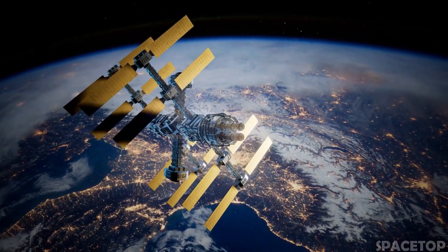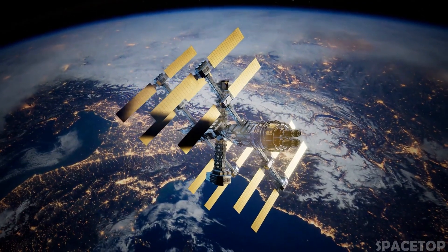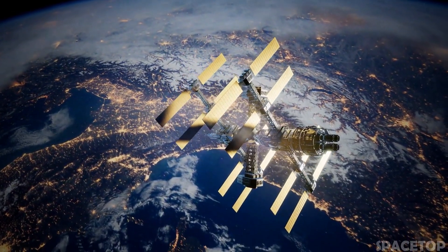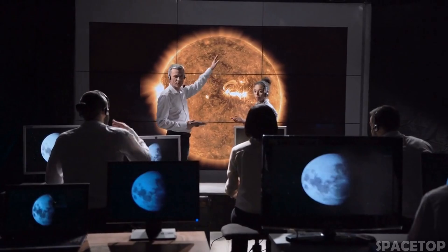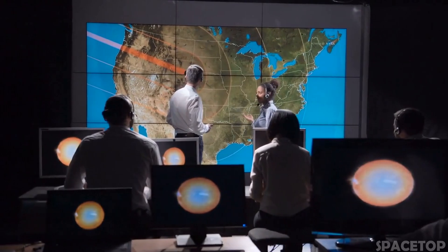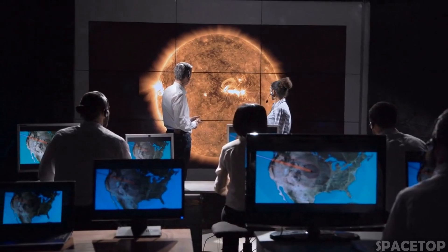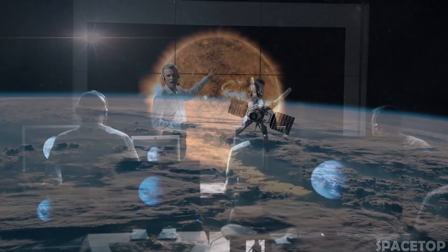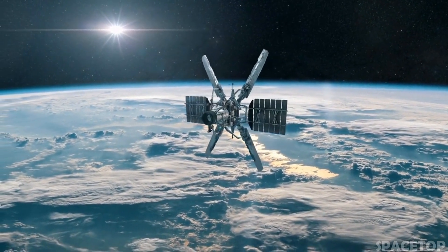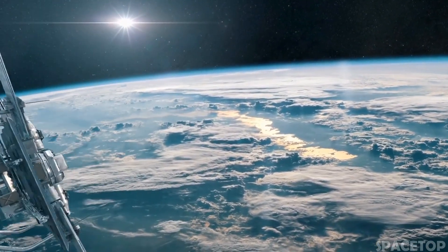Kepler's task was to continuously scan a fixed area of the sky within our Milky Way galaxy. At the time of launch, it had the largest primary mirror ever sent into space. During his nine years in space, Kepler discovered 530,536 stars and confirmed the existence of 2,662 new exoplanets.